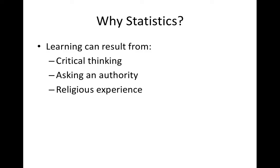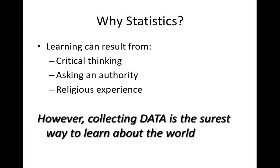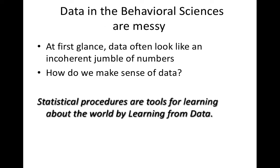We can learn about things in a number of different ways. We can critically think about something — ponder the pros and cons. We can ask an authority figure like a doctor or psychologist. Or we can have a religious experience. But I would contend that collecting data is the surest way to learn about the world. The problem is that in the behavioral sciences, data are very messy — often at first glance they look like an incoherent jumble of numbers. Statistics help us answer the question: how do we make sense of these data? Statistical procedures are tools for learning about the world by learning from data.